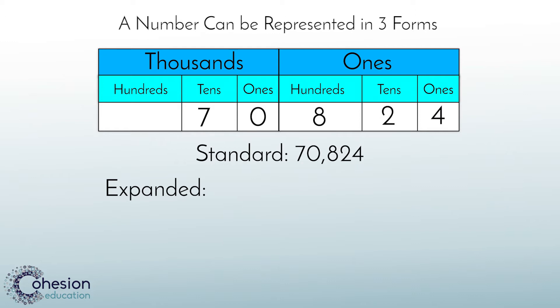Let's take a look at how to write 70,824 in expanded form. Remember, when writing these numbers together, each value is separated by an addition symbol, making expanded form for 70,824 look like this: 70,000 plus 0,000 plus 800 plus 20 plus 4. It is important to find the value of each digit one at a time.